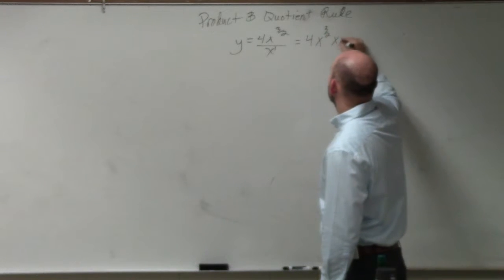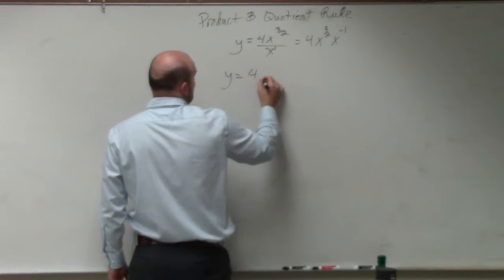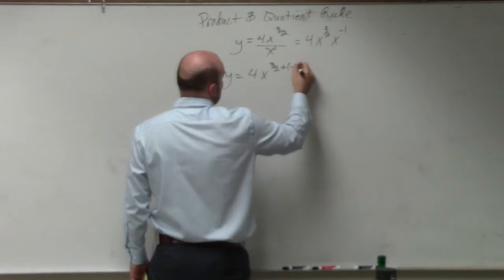3 halves times x to the negative 1. So basically, y is equal to 4 times x to the 3 halves plus a negative 1.